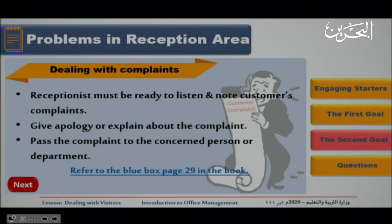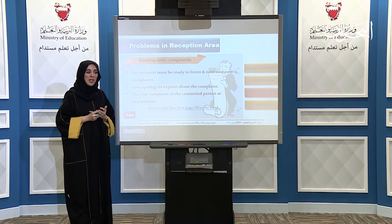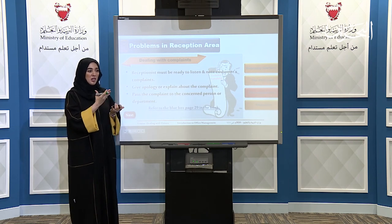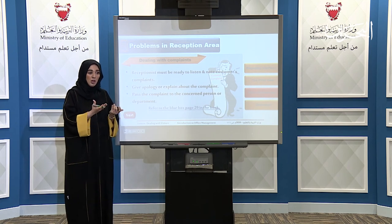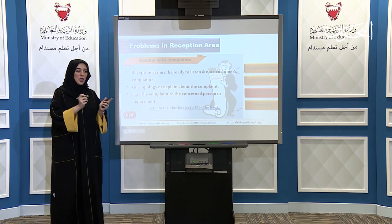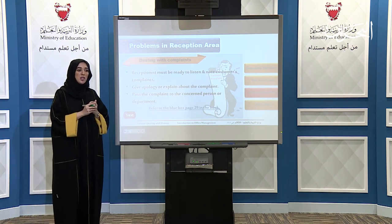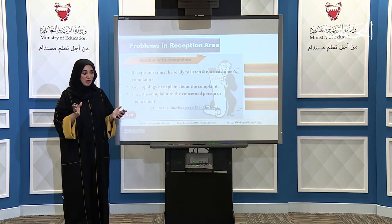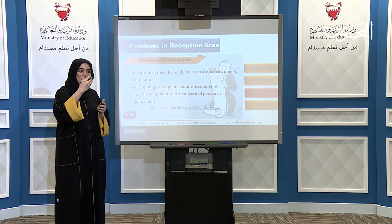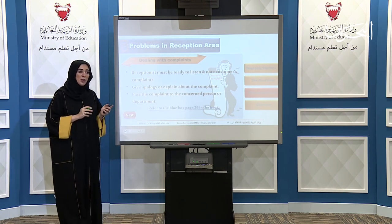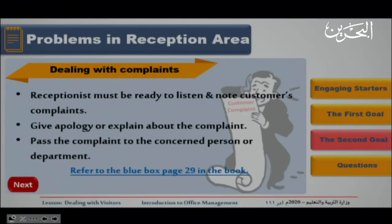Dealing with complaints: the receptionist must be ready to listen and note customer complaints. When a customer comes with a complaint, she must stop everything, listen to him, and write down what he is saying — not what she was working on. Then, give an apology or explain about the complaint. She must apologize on behalf of the company. After noting it down, pass the complaint to the concerned person or department. For example, if a product was damaged, refer it to the sales department. You can refer to the blue box, page 29, in the book for more examples.